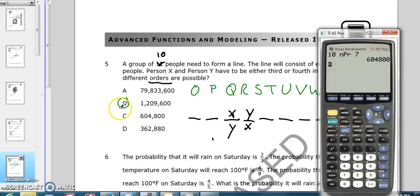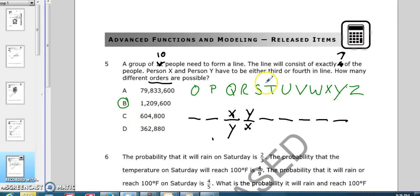However, that's not the correct answer, because X and Y can switch places. So that doubles the 604,800 to 1,209,600.